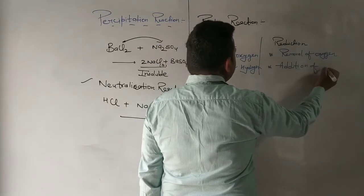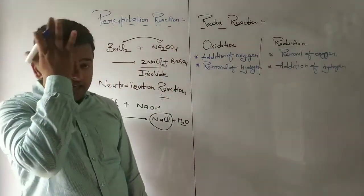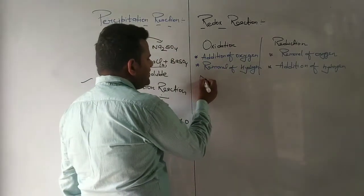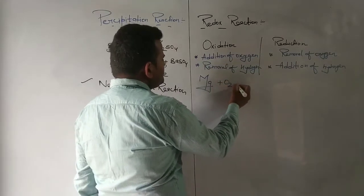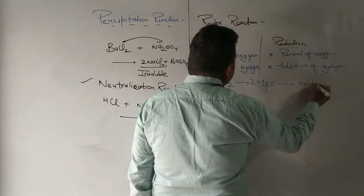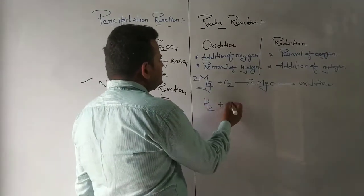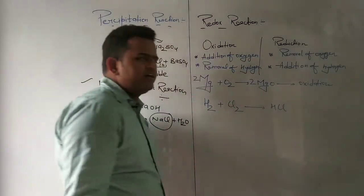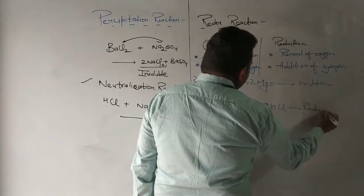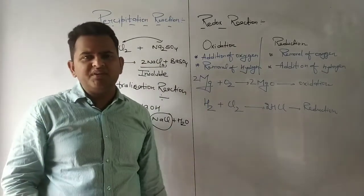For example, magnesium ribbon reacting with oxygen is an oxidation reaction. If I mix H₂ and Cl₂, we get HCl — this involves the addition of hydrogen, so it is a reduction reaction. Together these make up oxidation and reduction reactions.